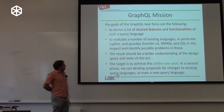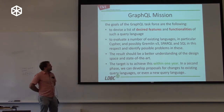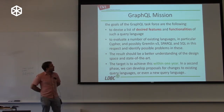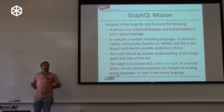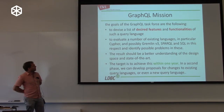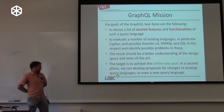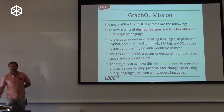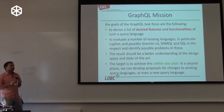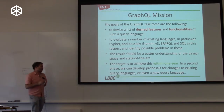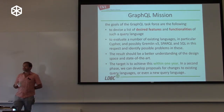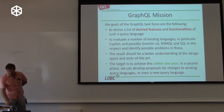The goals are to devise a list of desired features and functionalities of a graph query language, and also to look at the state of the art — evaluating Cypher, Gremlin, SPARQL, and SQL — and identify possible functional holes or other undesired properties that might be improved. The result should be a better understanding of the design space and state of the art, targeted within one year. That one year has now completed. The subsequent phase would be to develop proposals for changes to existing languages, or potentially even a proposal for a completely new query language.